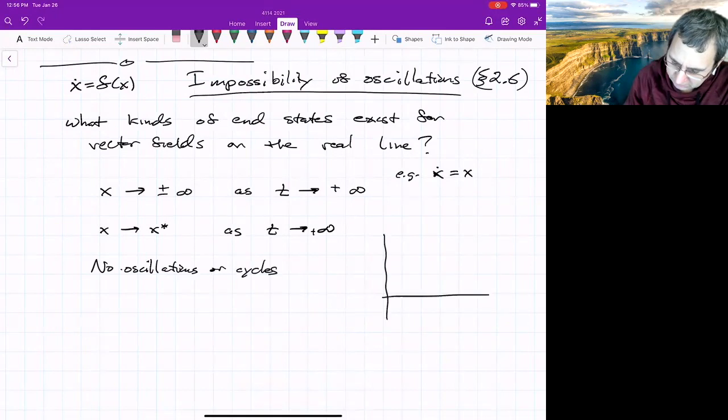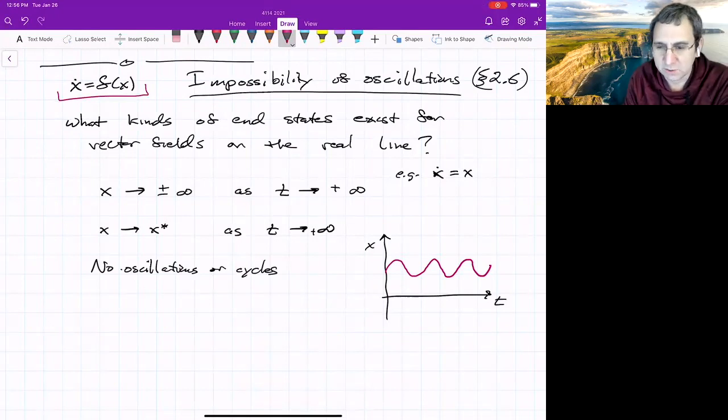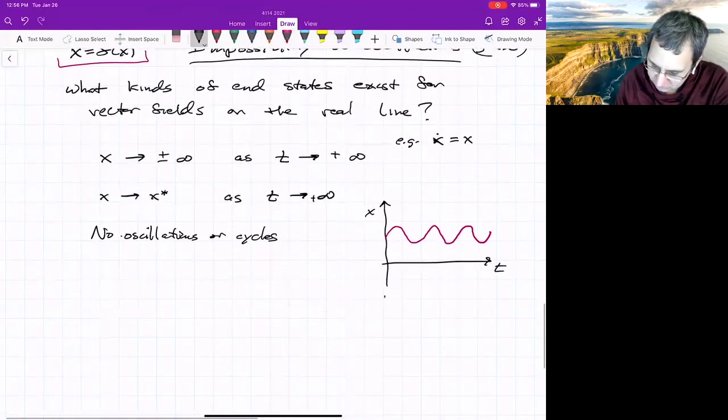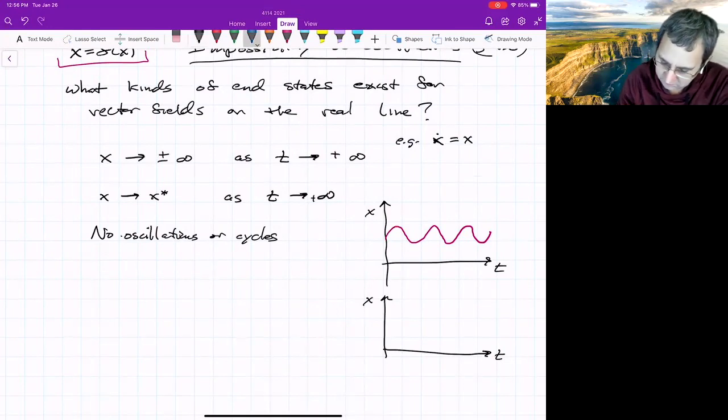So you cannot get something that looks like this happening. You can't have the state oscillating in x. If you just have a one dimensional vector field on the real line, you also will not have periodically oscillating behavior. You can't have kind of damped oscillations either. So you won't have anything that seems to be kind of zeroing in on a fixed point.